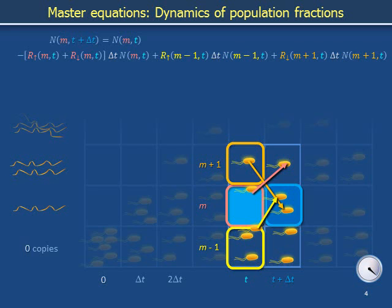The numbers of cells that have removed themselves from or moved themselves into state m over a time interval delta t increase linearly in delta t for small values of delta t. To frame our discussion more precisely, we recognize that the equation we have written describes N on m,t plus delta t as a Taylor expansion with respect to delta t, with the constant term N on m,t along with first order terms in delta t written out explicitly. Terms with squared and higher powers of delta t are implied. Moving the constant N on m,t to the left-hand side, the difference N on m,t plus delta t minus N on m,t is the difference between the numbers of cells in the two blue boxes. We call this difference delta N on m,t.